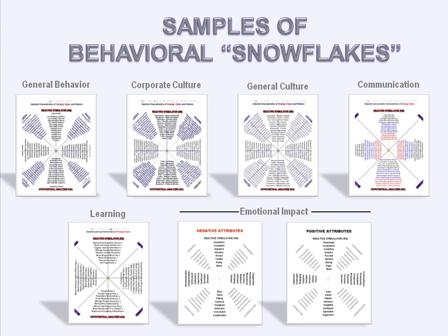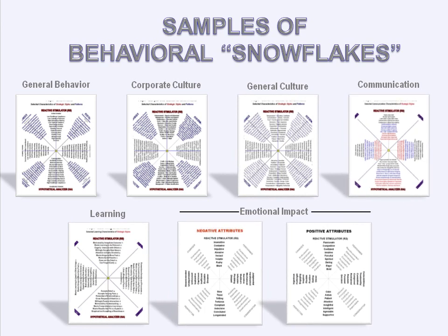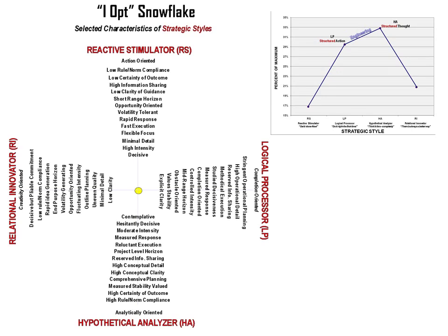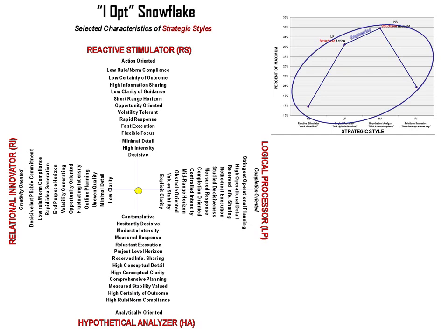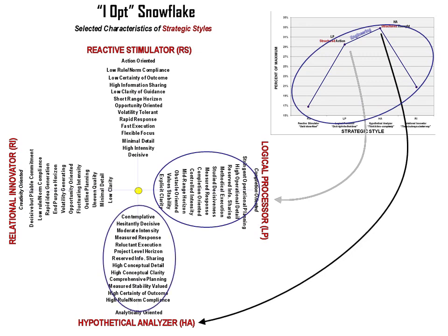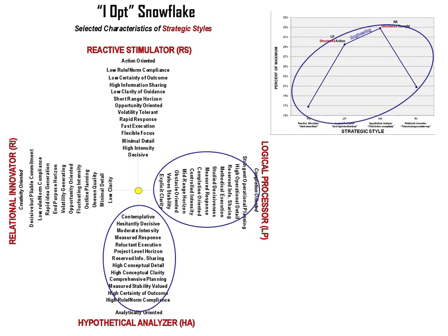These are templates that outline behavioral qualities on such subjects as corporate culture, general culture, learning, communications, emotions, and the like. Here is how they work. Let's start with the General Behavior Snowflake. The snowflake tool was designed to be used with an IOP graphic, which measures and makes use of the areas in the various quadrants. But for present purposes, let's just simplify things and make use of the style axes. The nodes on the profile relate to the descriptions on each axis — the logical processor or LP style, and the analytical HA style. These are IOP's first order descriptive variables. Personality judgments typically consider the entire range of behaviors represented by all four IOP styles.